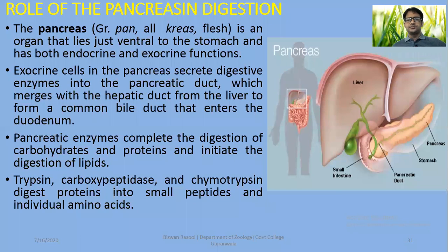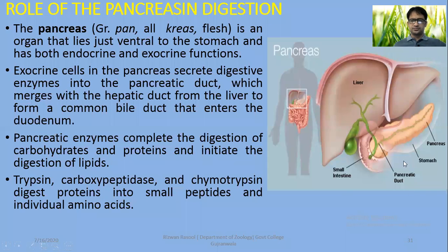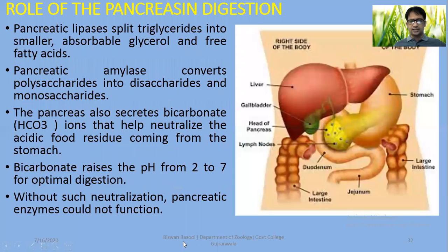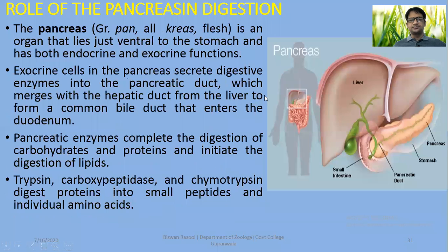Pancreas — 'pan' means all and 'kreas' is a Greek word meaning flesh. It is an organ that lies just ventral to the stomach. As you can see here, it is on the ventral side of the stomach. It lies ventral to the stomach and has both endocrine as well as exocrine functions.